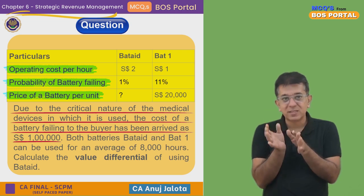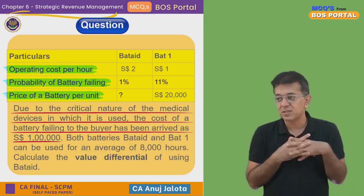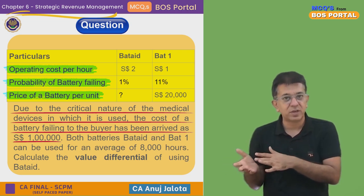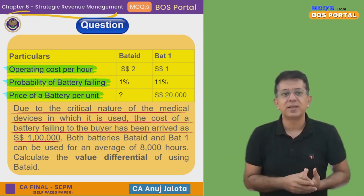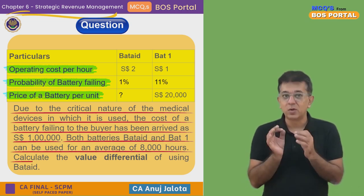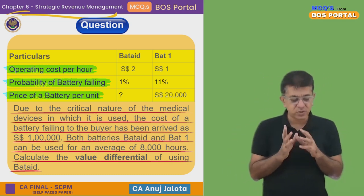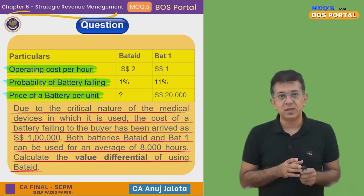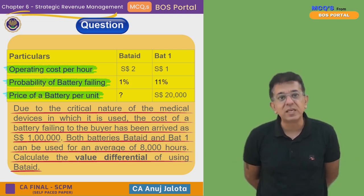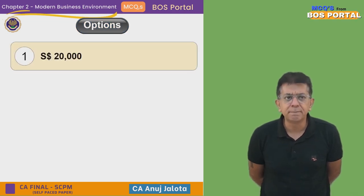Due to the critical nature of the medical devices, the cost of a battery failing to the buyer has been arrived at one lakh rupees. So if a battery fails, it costs the user one lakh rupees — something like a hard disk crash requiring expensive data recovery. Both batteries, Batad and Bat One, can be used on an average for eight thousand hours. The question asks us to calculate the value differential of using Batad.